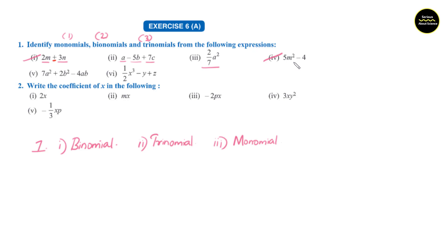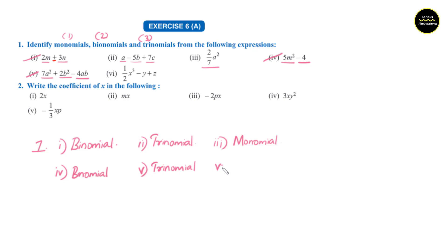Fourth question: 5m square minus 4. This is the first term and 4 is the second term. The fourth one is also a binomial. Question number 5: 7a square plus 2b minus 4ab — 7a square is one term, 2b square is the second term, and 4ab is the third term. This is also a trinomial. Question number 6: 1 by 2 h cube minus y plus z — 1 term, 2 terms, 3 terms — that is also a trinomial.